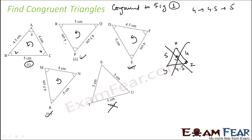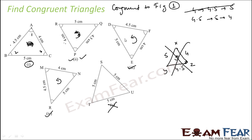I was searching for the series 4, 4.5, 5 anticlockwise and found it in those triangles, but not in the others. Let's try an alternate starting point: 4.5, then 5, and then 4. Starting with 4.5 anticlockwise — 4.5, 5, 4 — congruent. Starting here: 4.5, 5, 4 — congruent. And this one: 4.5, 5, 4 — also congruent.